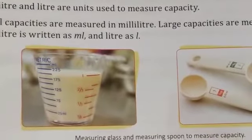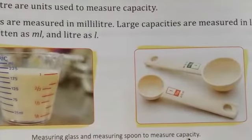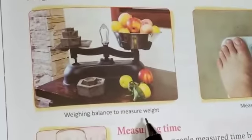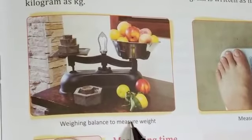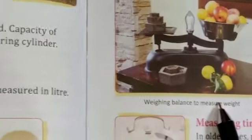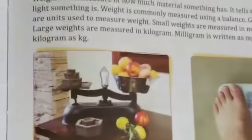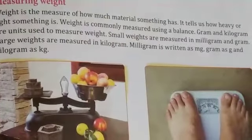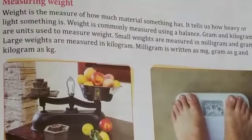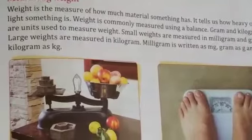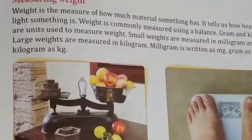Measuring Weight: Weight is the measure of how much material something has — it tells us how heavy or light something is. Weight is commonly measured using a balance. Gram and kilogram are units used to measure weight. Small weights are measured in milligrams and grams, and large weights are measured in kilograms. Milligrams is written as mg, gram as g, and kilogram as kg. Thank you.